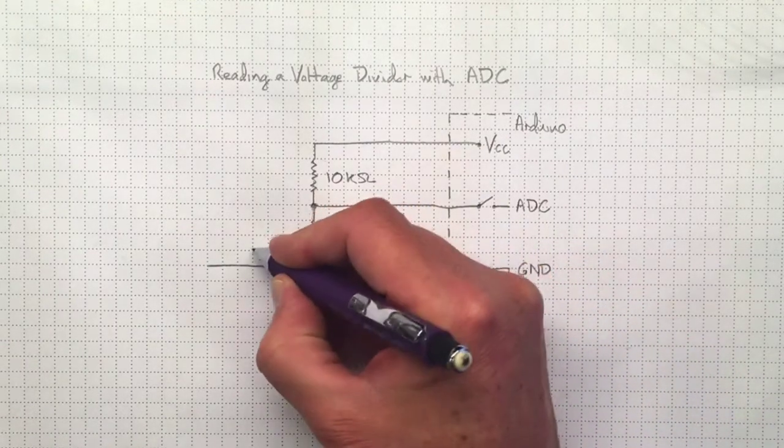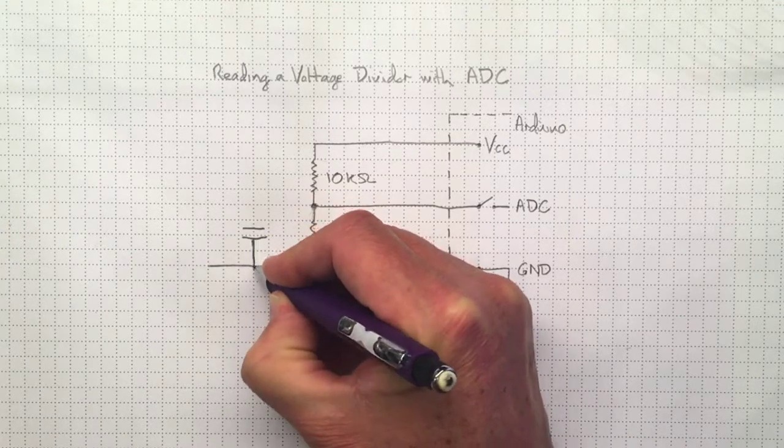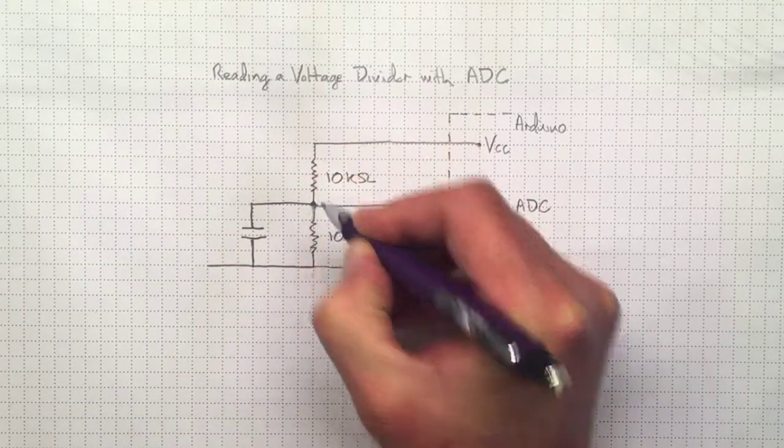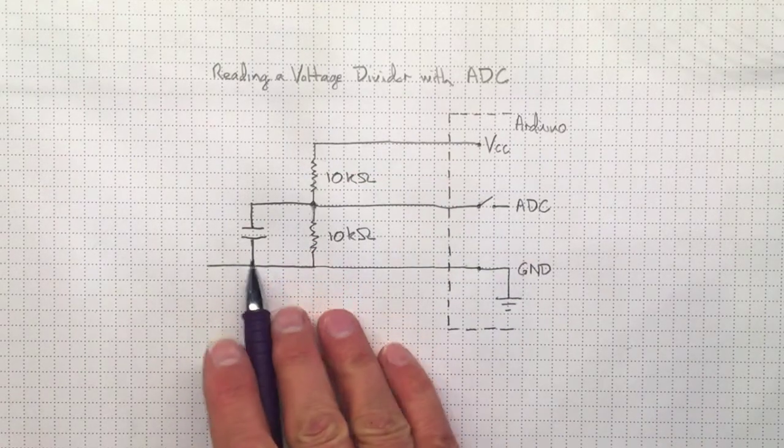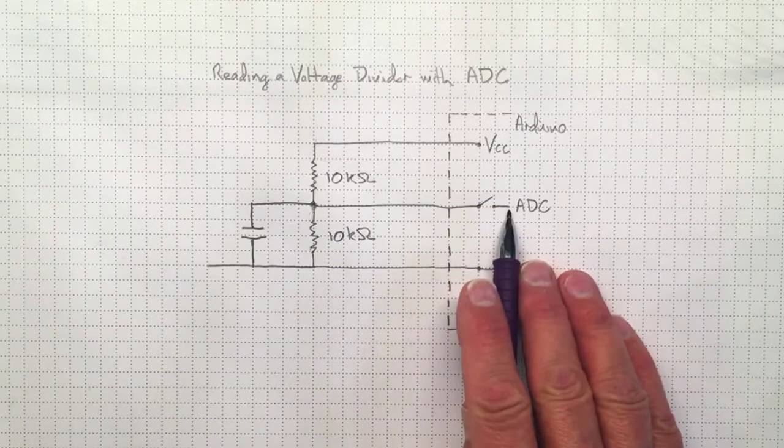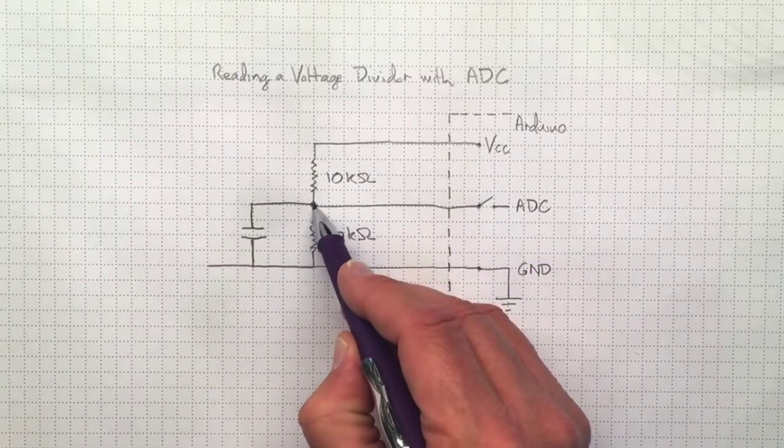One of the things we can do to help with that is to add a capacitor to the circuit that will act as a charge reservoir. When the analog-to-digital converter tries to pull out some more current, the capacitor will supply it. That capacitor will store the charge, and will keep the analog-to-digital converter from pulling the voltage down for that short period when the conversion is taking place.